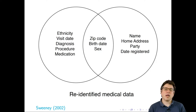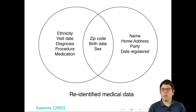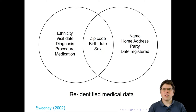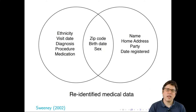At the time, the governor of Massachusetts was William Weld. Through this process of re-identification, Sweeney found all of William Weld's insurance records in the data. Rather than posting this online, she sent him a copy of all his insurance records. Once he saw that, he realized they had a problem. This example shows that stripping out certain information creates the appearance of anonymity without actual anonymity.